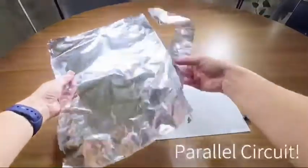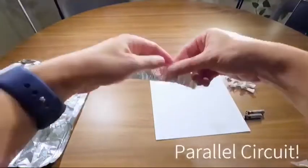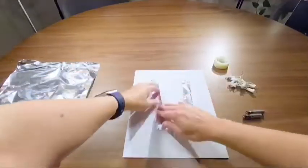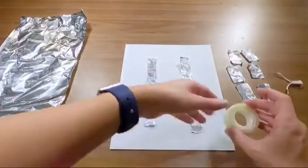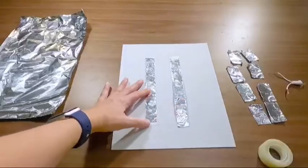Let's start by cutting a long strip of aluminum foil and fold it in half, then cut it in two pieces. Now let's place the two aluminum foil strips in parallel and tape them to the paper.